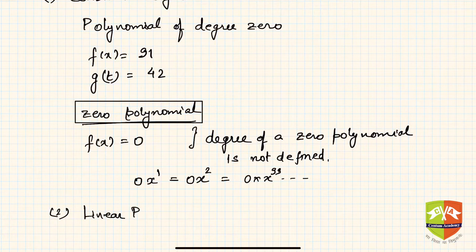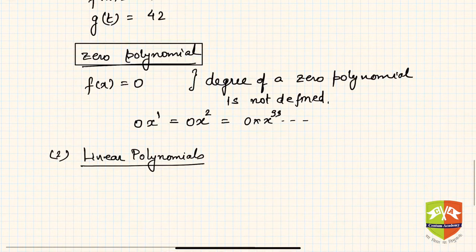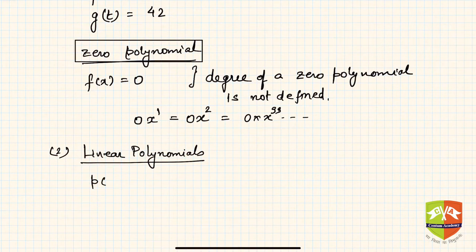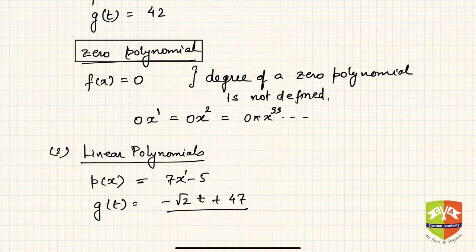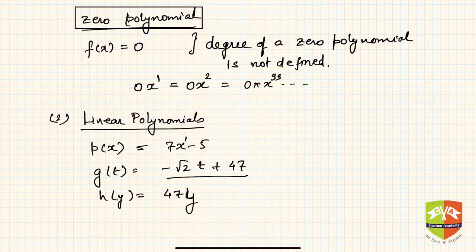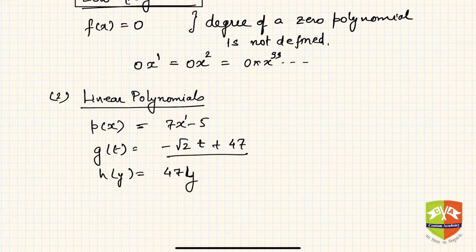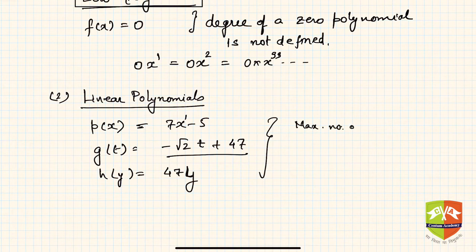The second category is the linear polynomial. For example, p(x) = 7x − 5 is a linear polynomial because the highest degree term is 7x, whose degree is 1. Similarly, g(t) = −√2·t + 47 and h(y) = 47y are also linear polynomials. The maximum number of terms in a linear polynomial is 2.